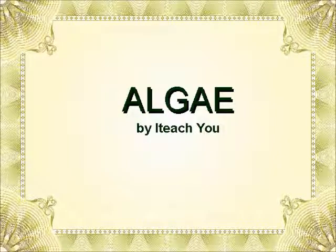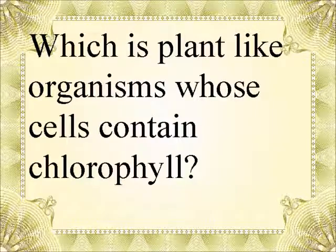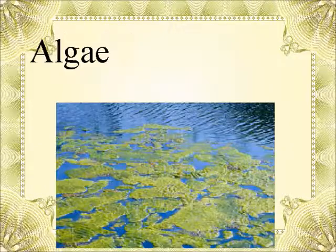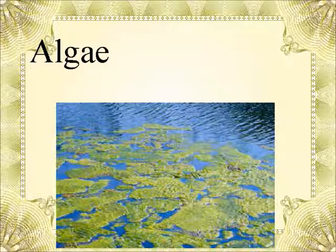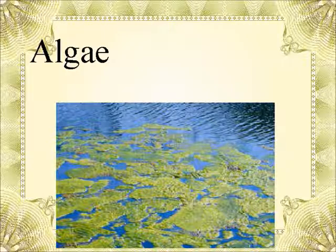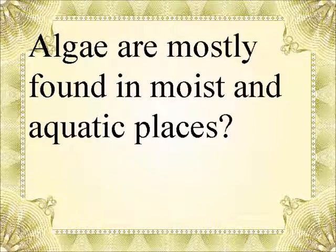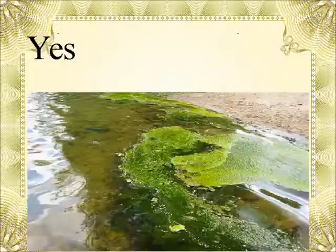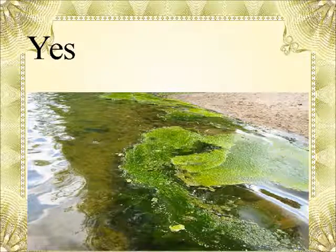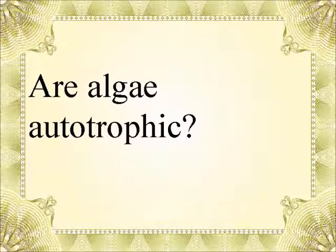Algae, by Itachu. Algae are plant-like organisms whose cells contain chlorophyll. Algae are mostly found in moist and aquatic places. Are algae autotrophic? Yes.